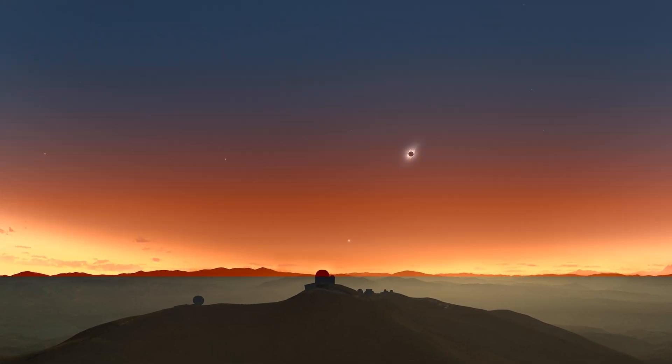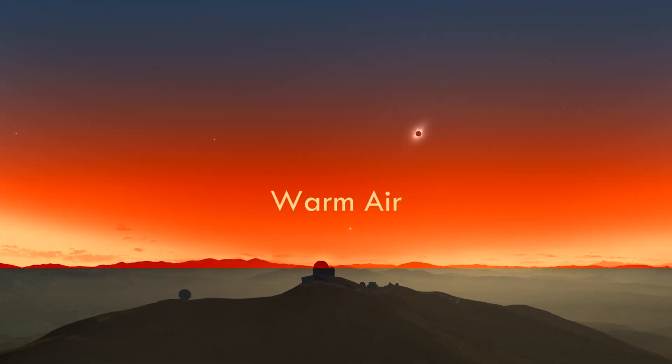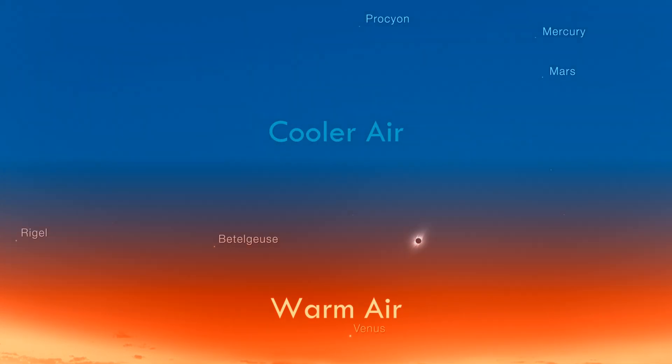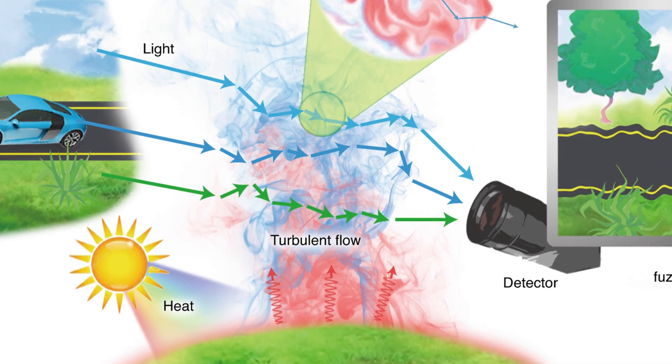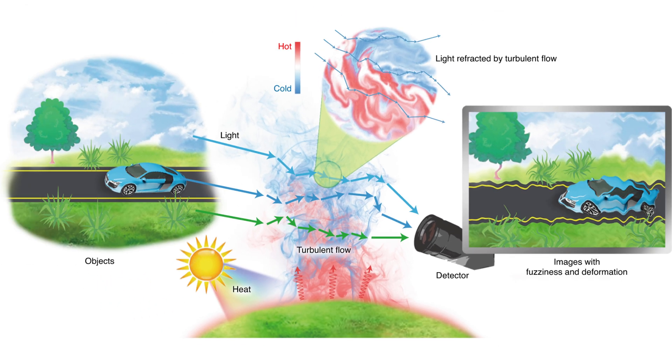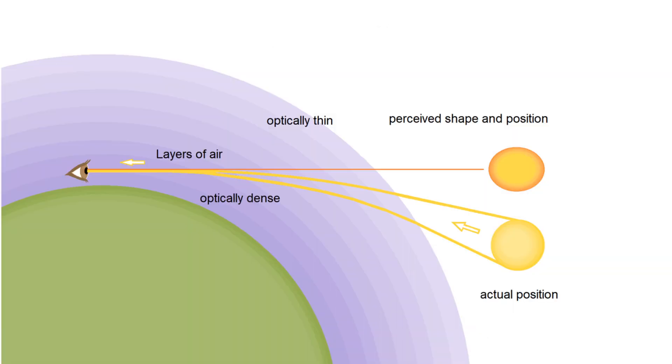Air near the ground is warmer and dense. Higher layers are cooler and less dense. As these layers mix, they create continuously shifting pockets of air with significantly different refractive indices. When starlight passes through, each patch of air bends the light a tiny amount.